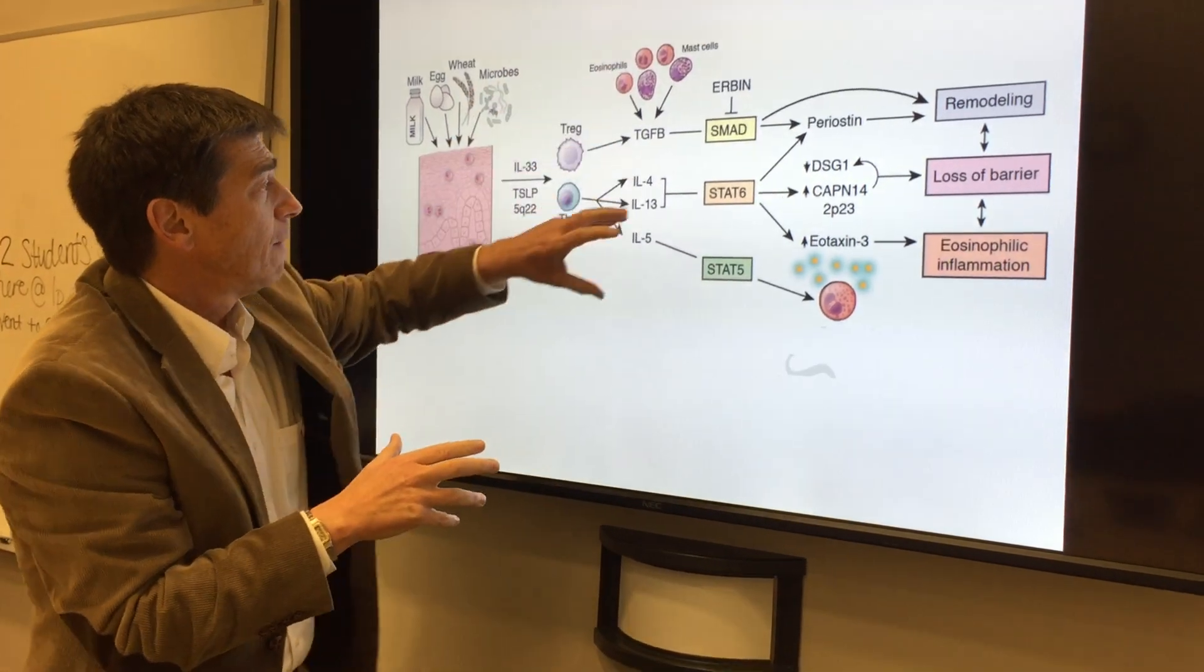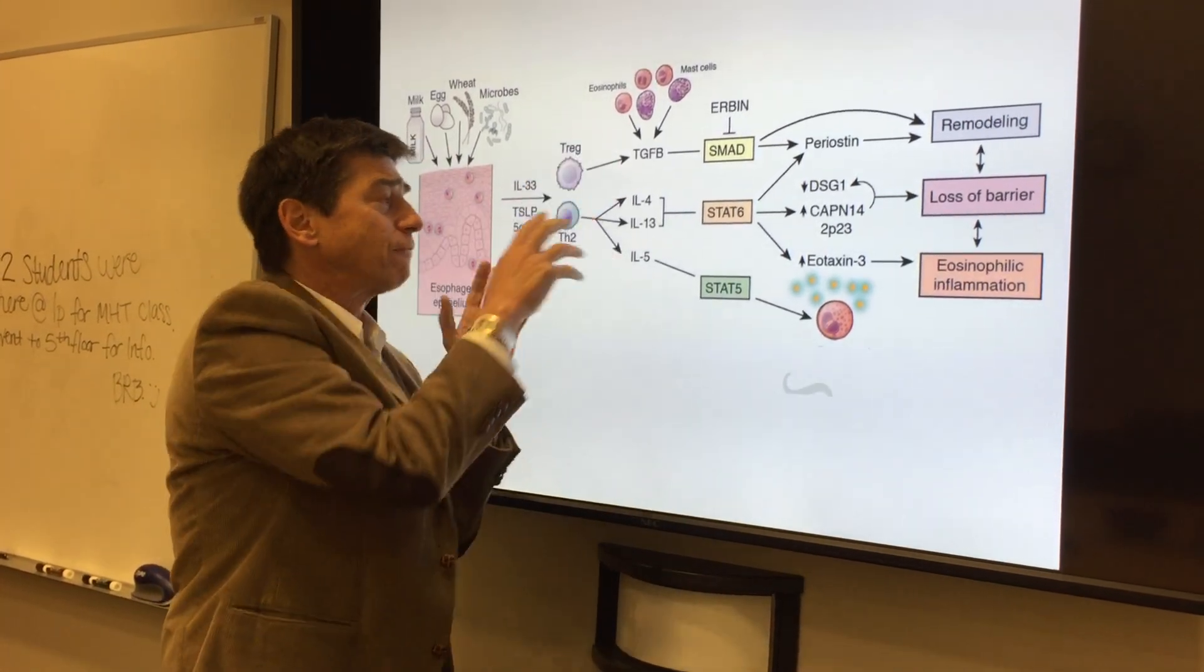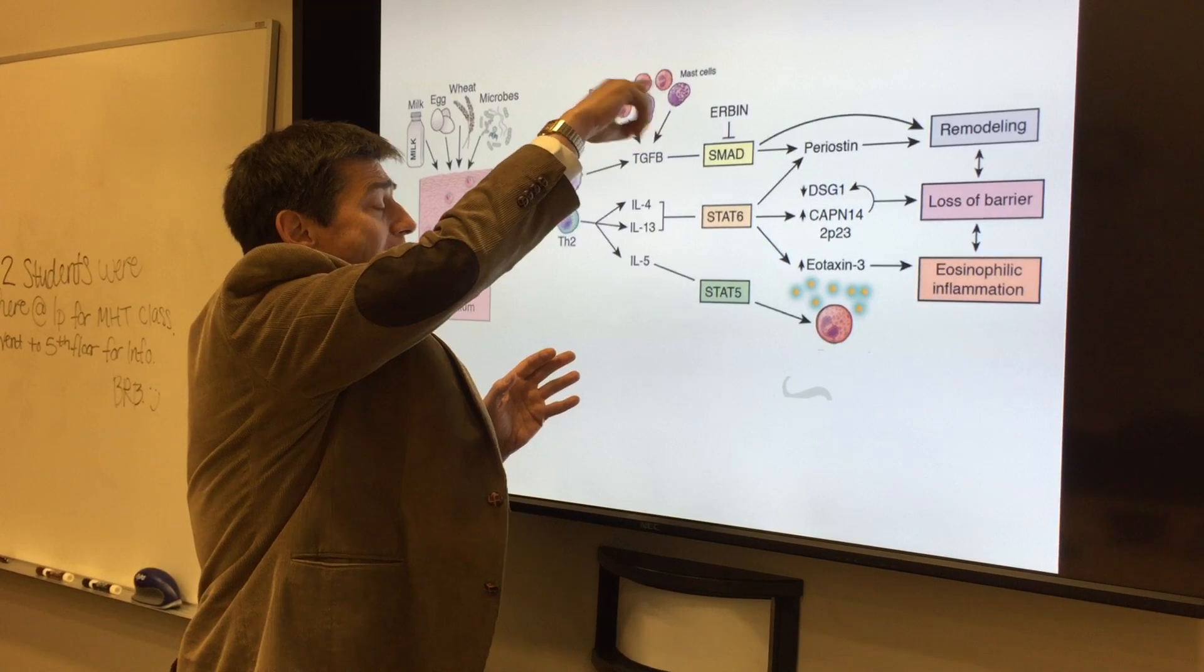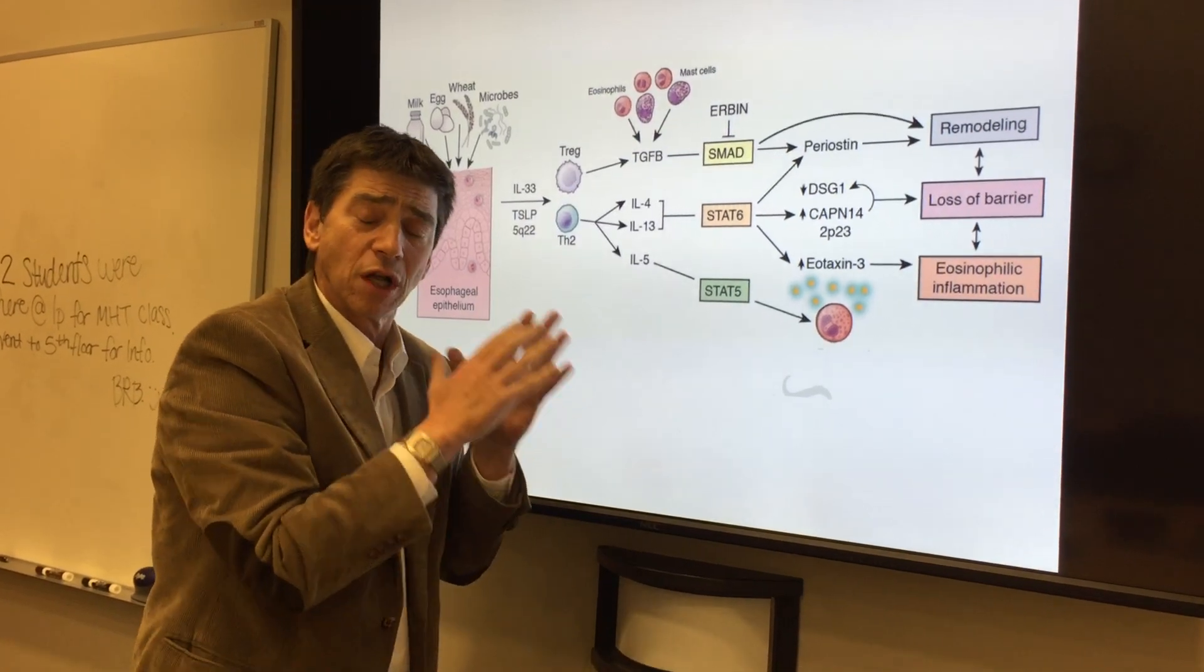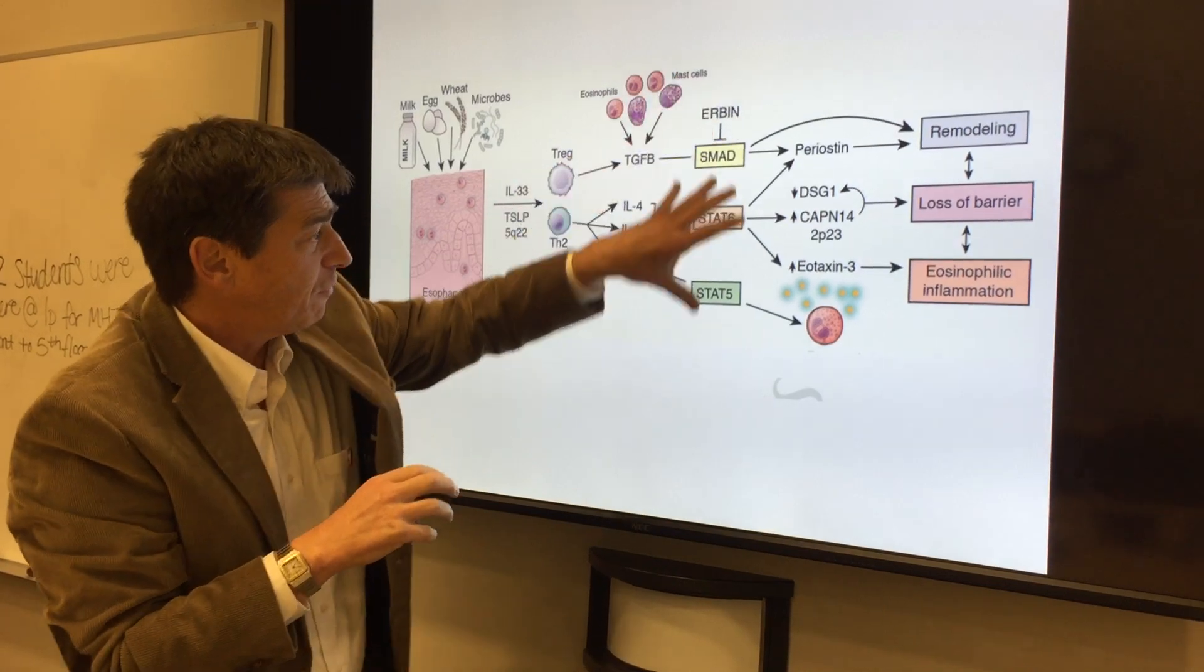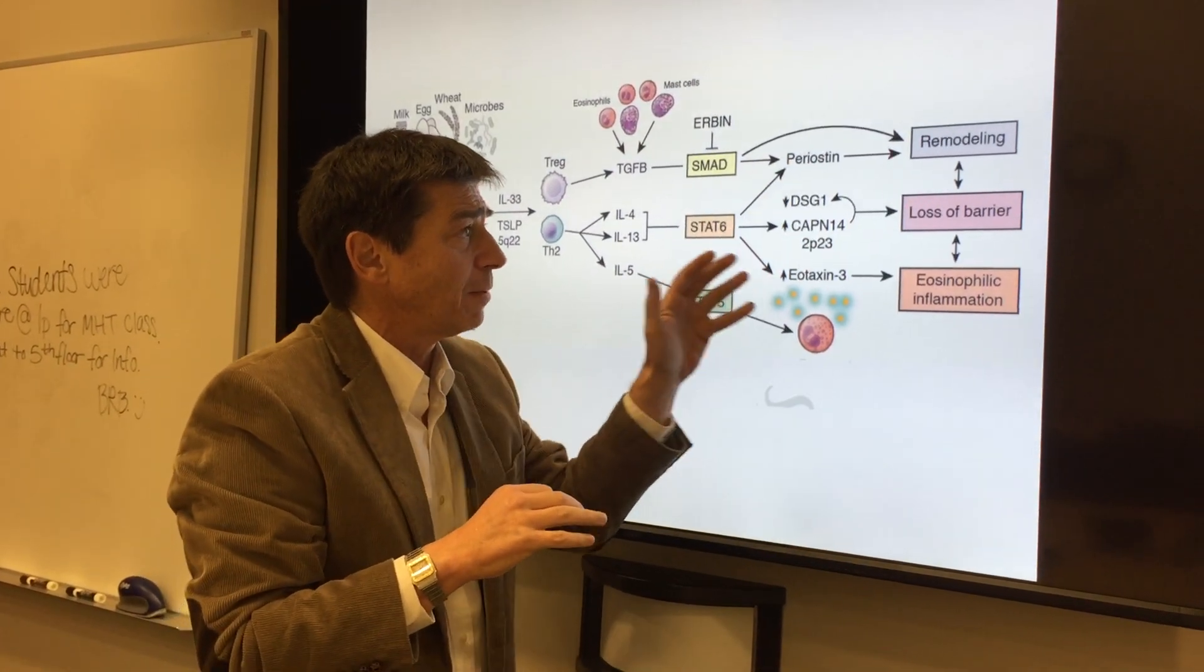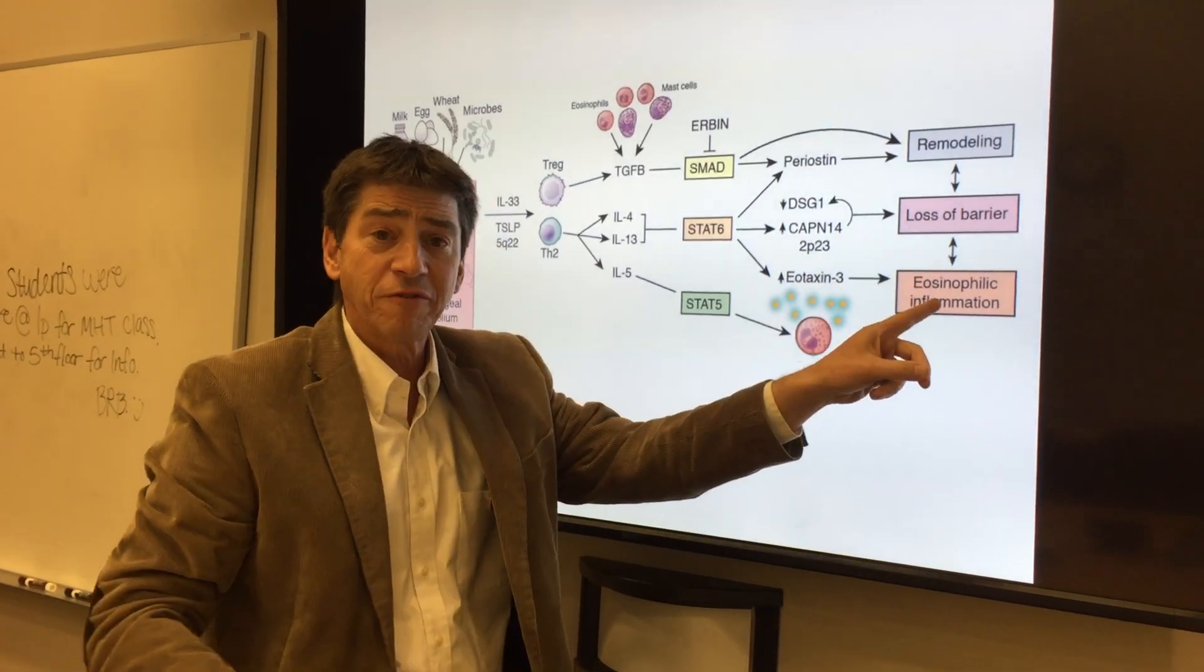And these cells orchestrate a set of responses that trigger mast cells and eosinophils, which are allergic inflammatory cells, to get activated in the tissue. We've defined intermediary signaling molecules and the particular events that take place that cause eosinophilic inflammation,